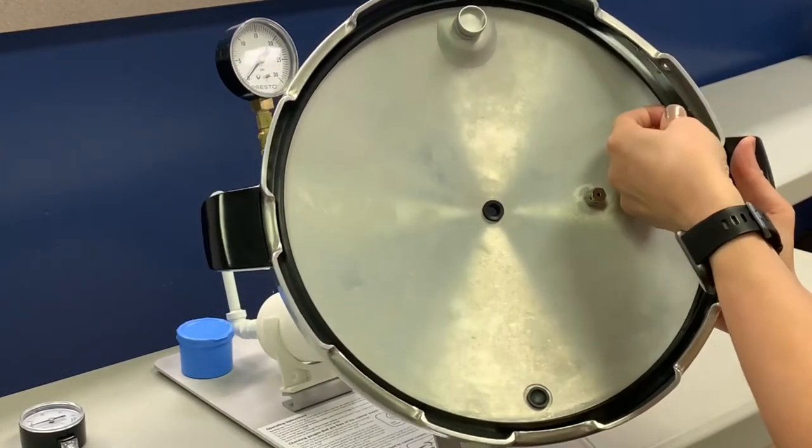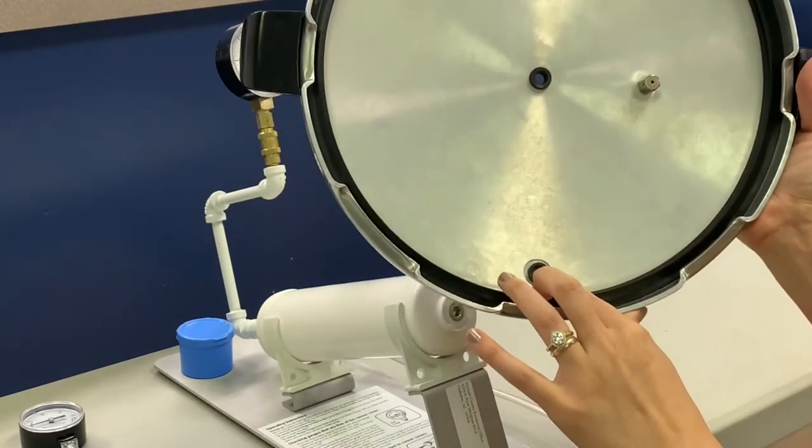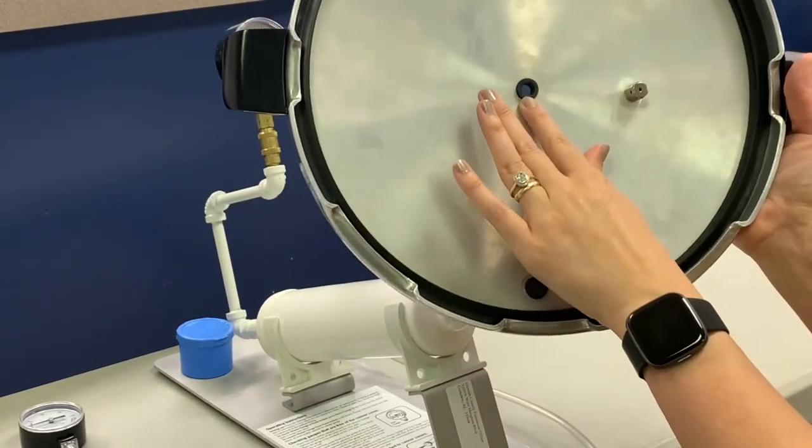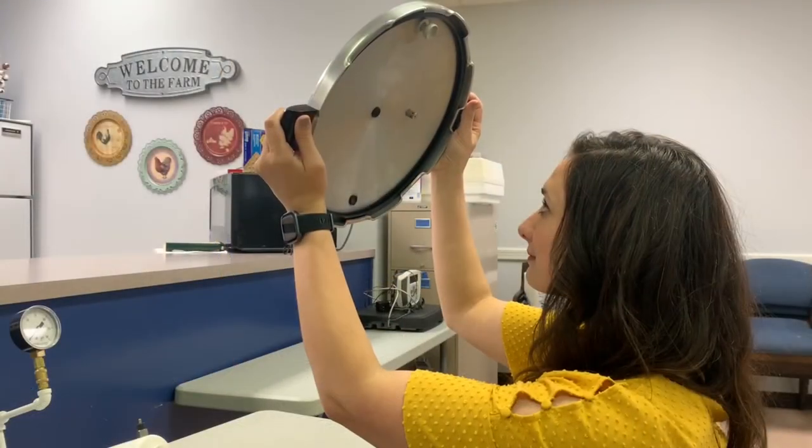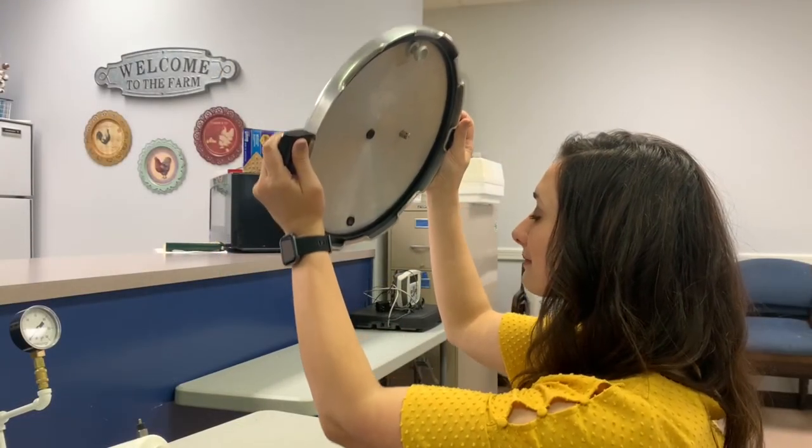You should check the other rubber parts of your lid. Check the seal, the safety plug, and where the gauge goes. They should be rubbery soft and without cracks. Hold the lid up to the light to make sure the vent and the gauge pipes are clean.